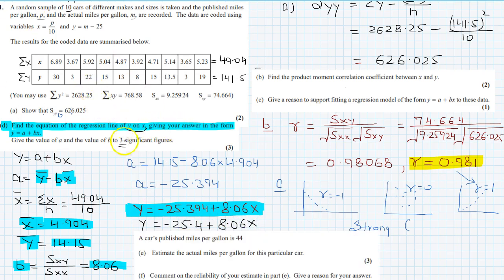The next part is the car's published mile per gallon is 44. Estimate the actual mile per gallon for this particular car. Let's say part e: car's published mile per gallon, so here published miles per gallon is p, so this p is equal to 44.